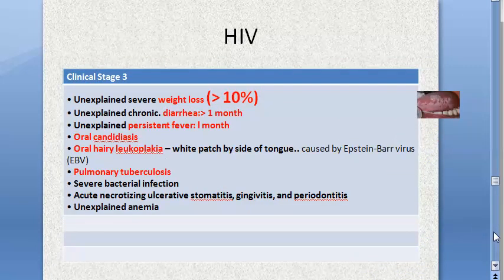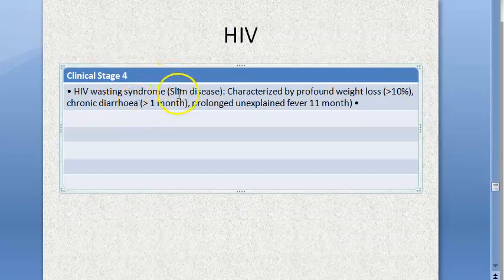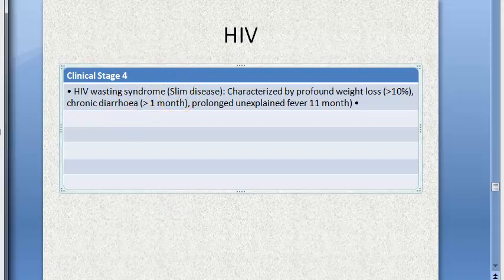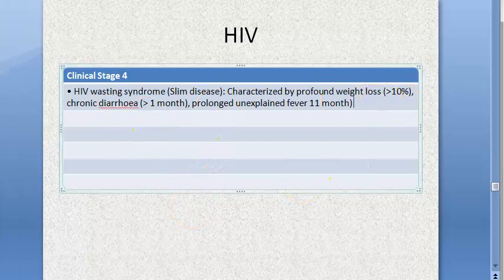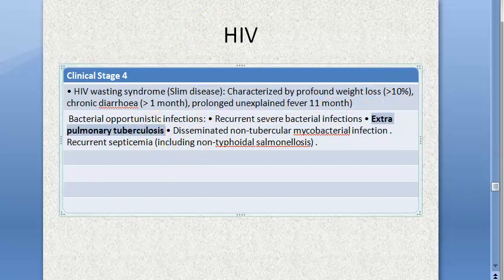Clinical Stage 4 includes HIV wasting syndrome (slim disease), characterized by profound weight loss greater than 10%, chronic diarrhea greater than one month, and prolonged unexplained fever of one month. Bacterial opportunistic infections include pulmonary tuberculosis (Stage 3) and extra-pulmonary tuberculosis (Stage 4). Non-typhoidal salmonellosis is also included.